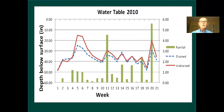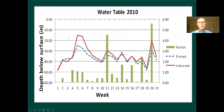Here we see a water table movement in 2010. Again, the soil surface is at the top, with depth shown below in inches. The undrained water table is definitely a lot higher than the drained. We also have the green bars showing rainfall. I'm showing several of these graphs because every year is going to be different. Here you can see that the water table was about 15 inches below the surface, which was way too much for optimum conditions of crop growth.